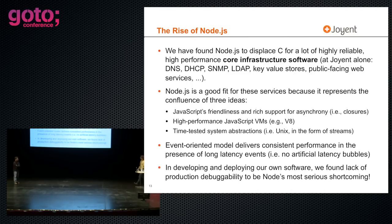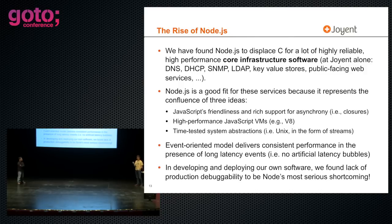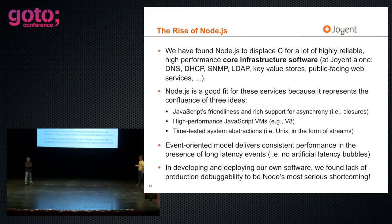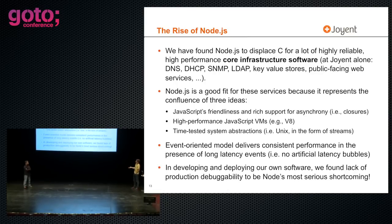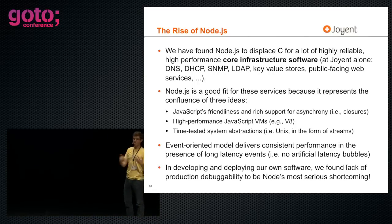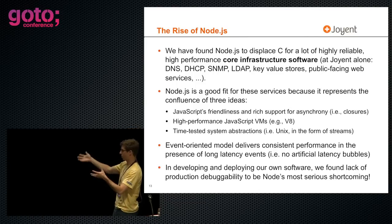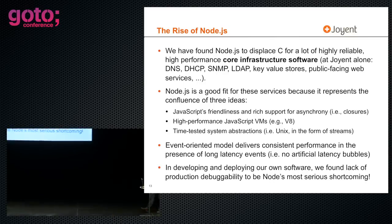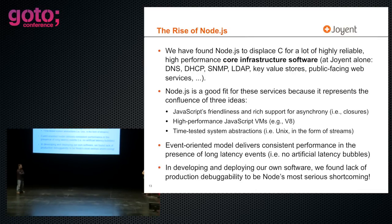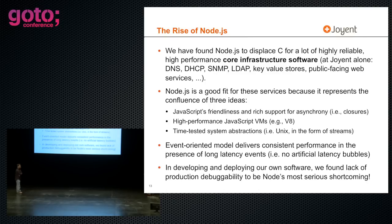A lot of our software at Joyent — our core software — is being written in Node. Stuff that was written in C, stuff we would have overwhelming biases to write in C. But for many of these services, they're actually simple enough and V8 is fast enough that it makes more sense to write in Node. We were able to get a prototype up in like two weeks and it was in production in about two months — it definitely would have taken a lot longer in C. Someone asked me: 'DHCP — really? You wrote a DHCP server in Node?' Actually, yes.